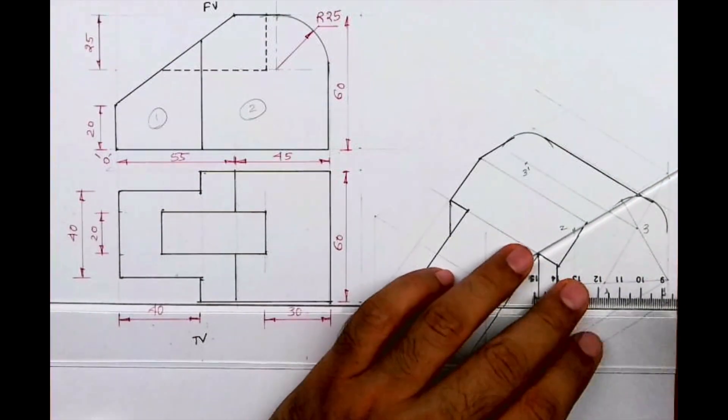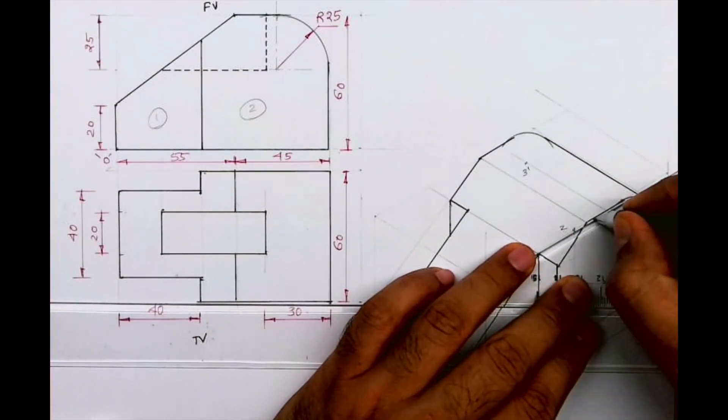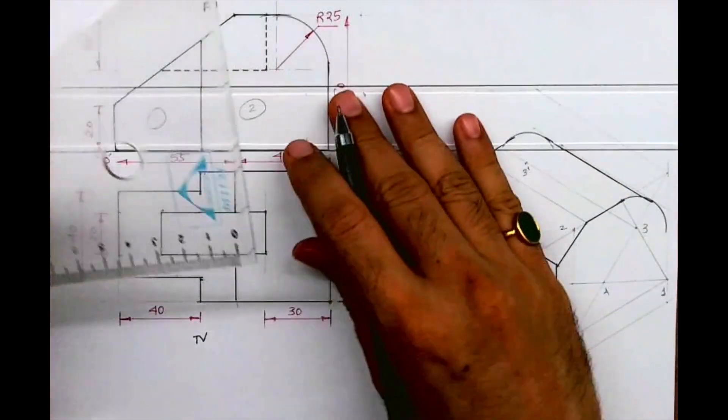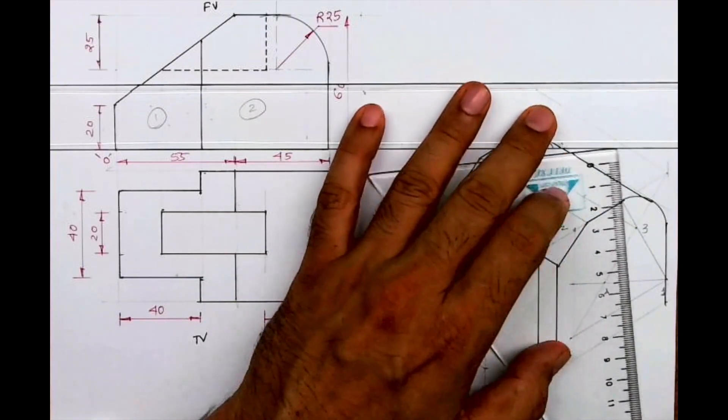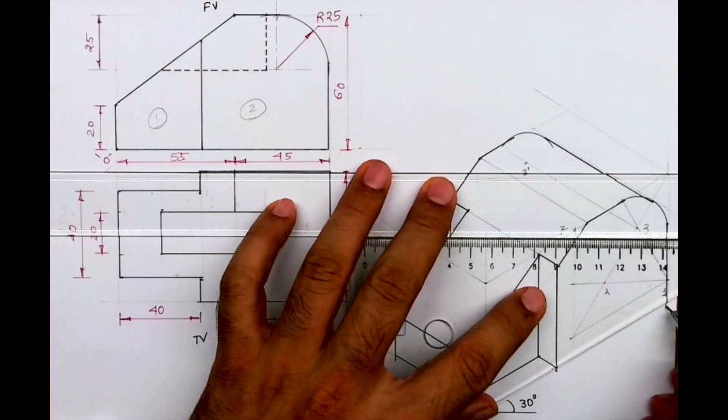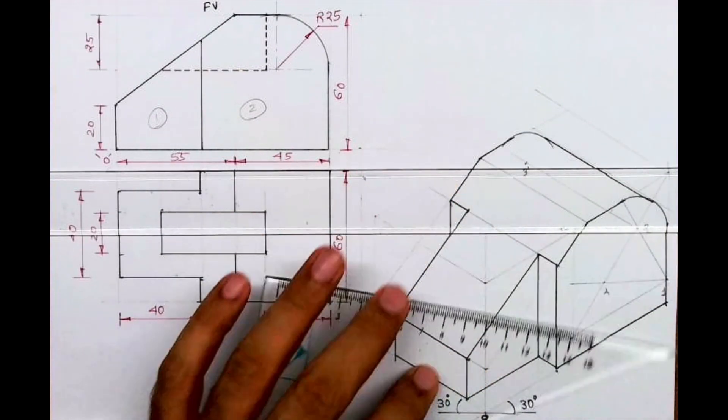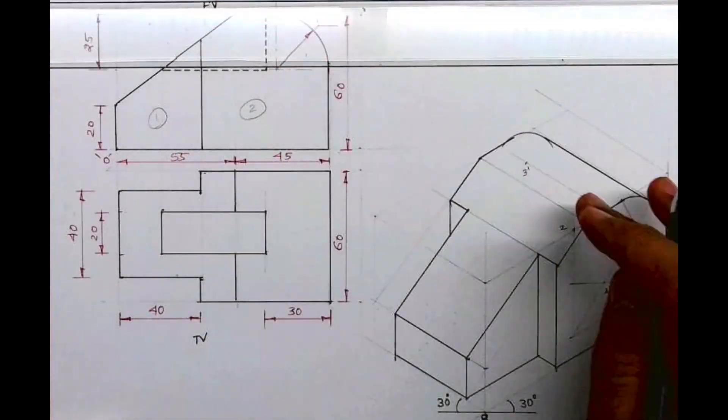Now after this, you draw all these lines dark. So we are done with this portion. Only thing we need to draw is that slot which is in between. For that, the height is 25.